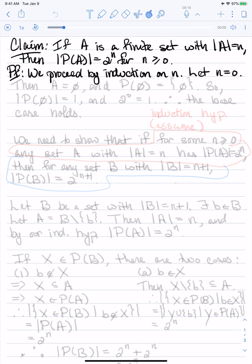Then the only set with 0 elements is the empty set, and the power set of the empty set is just the set that contains the empty set. So we see that the power set of the empty set has cardinality 1, and 2 to the 0 is equal to 1. Therefore, the base case holds.